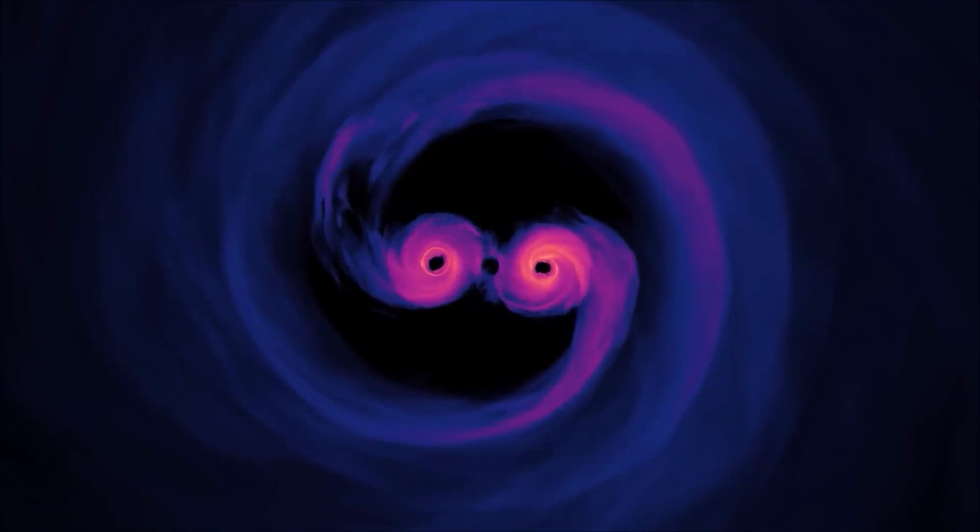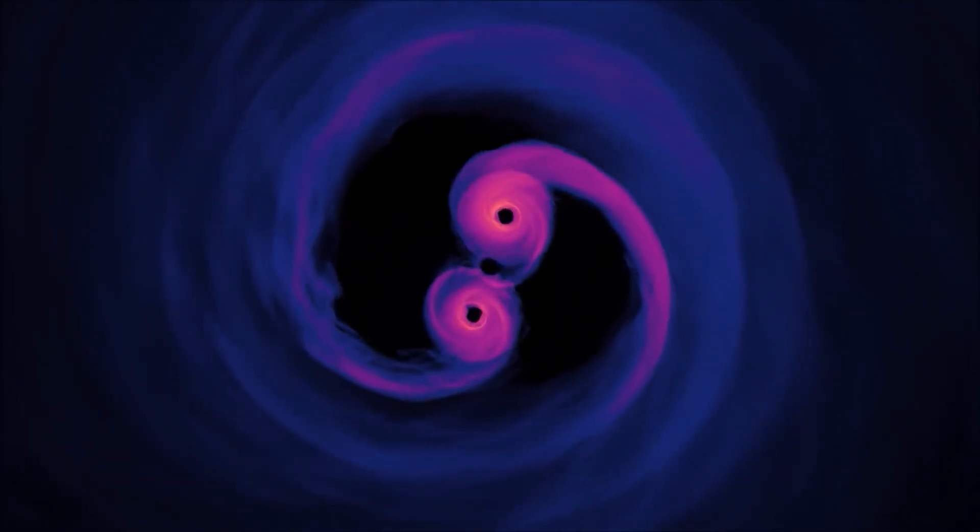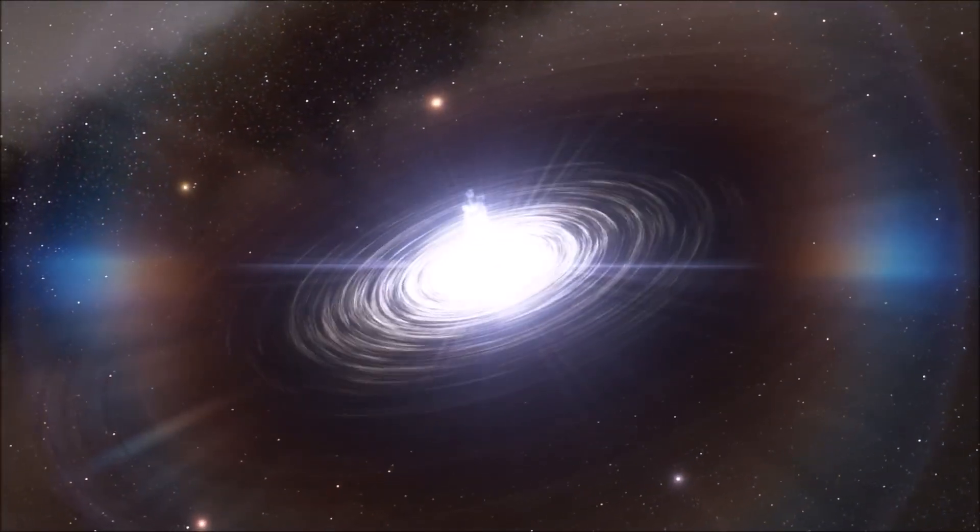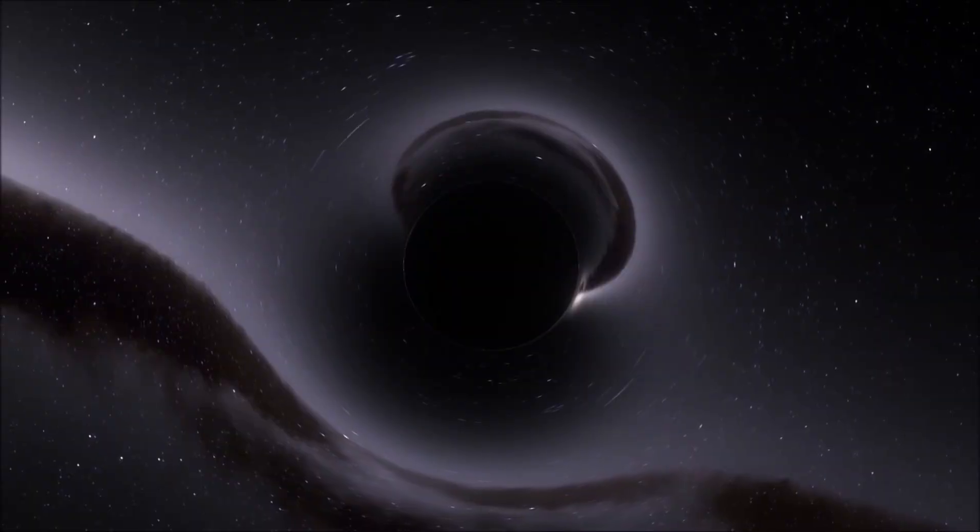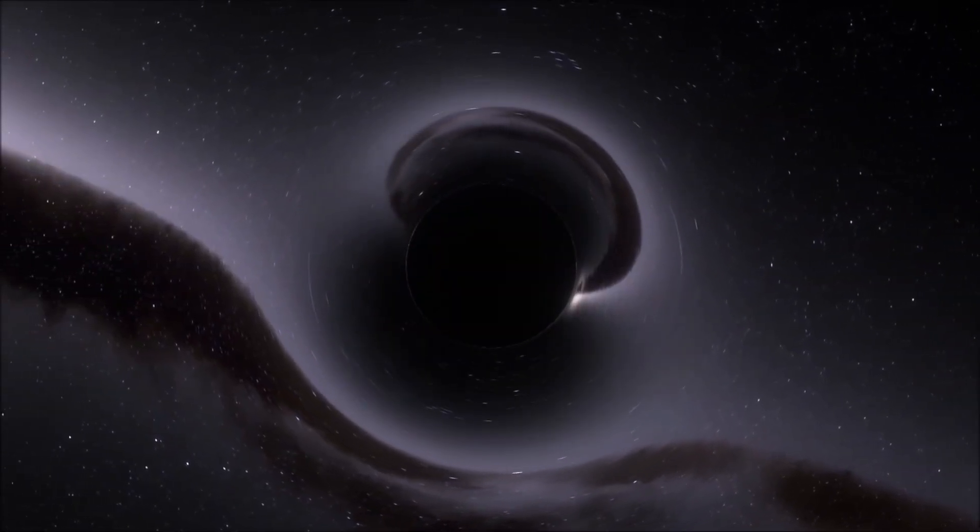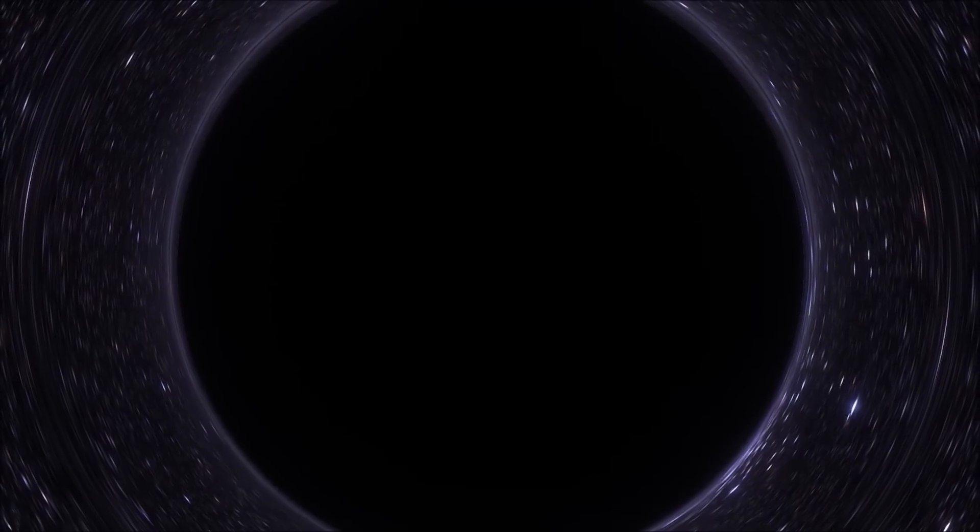When two black holes get a little too close, they start spiraling around each other. Eventually, they crash together, creating a single bigger black hole. This cosmic collision sends ripples through space-time. It's like throwing a rock into a pond, helping scientists understand some of the most powerful forces in the universe.